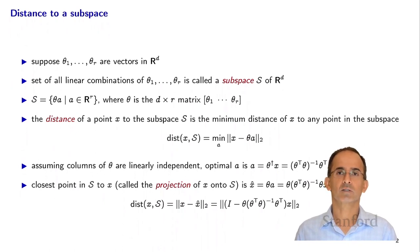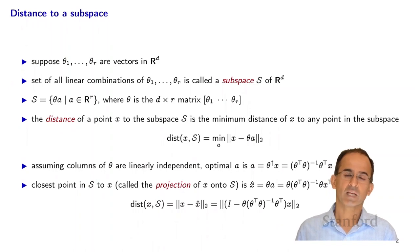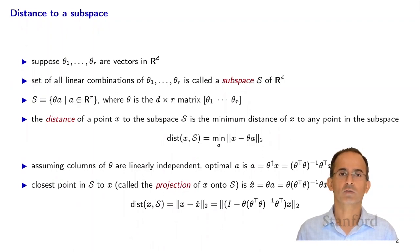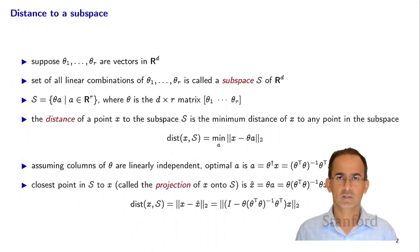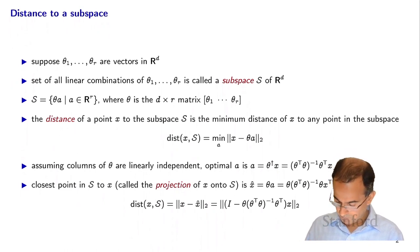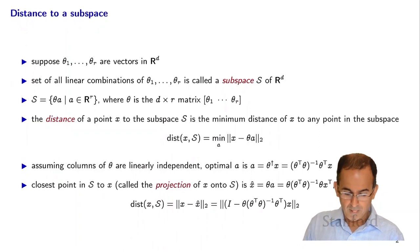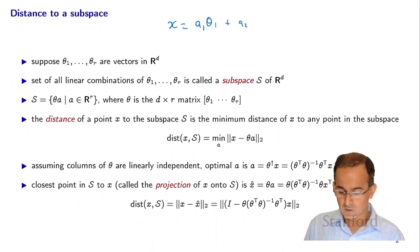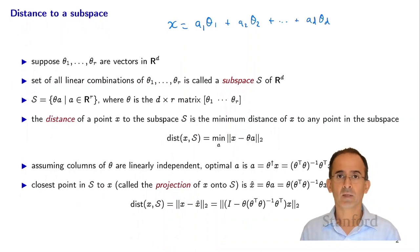In order to do that, we need the idea of distance to a subspace. We have a set of d-dimensional vectors Theta 1 through Theta r. When we take all possible linear combinations of those vectors, we get a subspace — combinations of the form x equals a1 Theta1 plus a2 Theta2, all the way up to ar Theta r, where we can pick the a's any way we like. All such possible vectors x form a subspace.